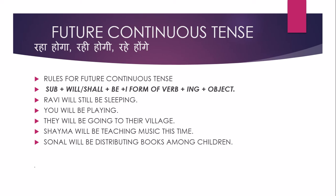तो इसमें first form के साथ ing का use करते हैं, लेकिन उससे पहले 'be' और उससे पहले will/shall। यानि कि Subject + will/shall + be + first form of verb + ing + object का इसमें use करते हैं।